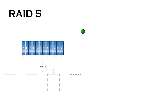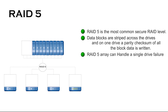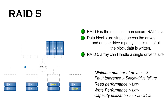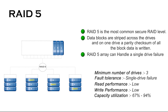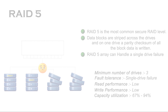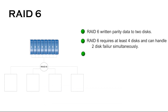RAID 5 is the most common secure RAID level. It requires at least three disks but can work with up to 16. Data blocks are spread across the disks, and on one disk there is a parity checksum of all the block data written. The parity data are not written to a fixed point — they are spread across all disks. If any one disk fails, the data or parity on the other disks can reconstitute the lost data. RAID 5 arrays can handle a single disk failure without losing data, but if two disks fail, all data will be lost.